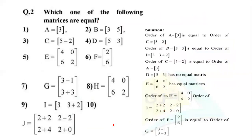Now question number 2 is: which of the following matrices are equal? I have A, B, C, D, E, F, G, H, I, J. So I have 10 options to compare.